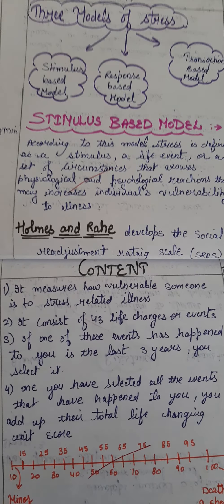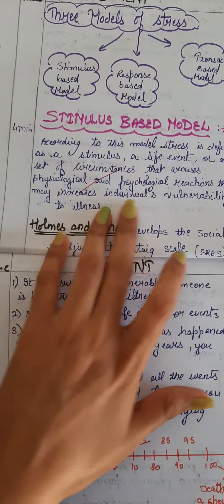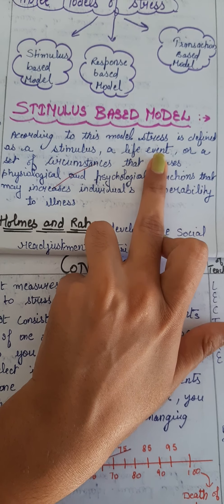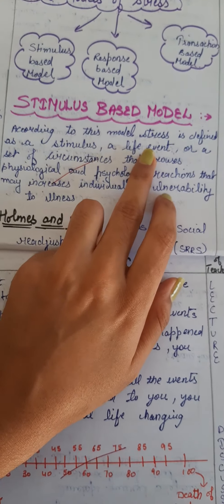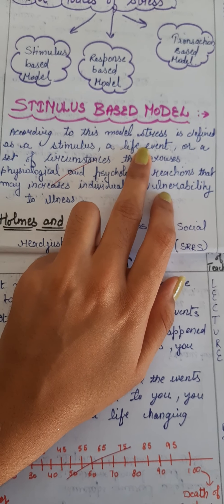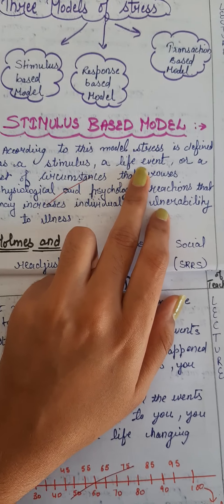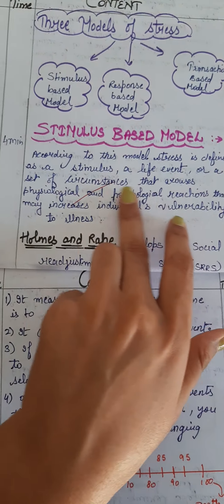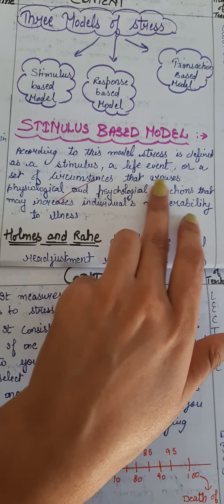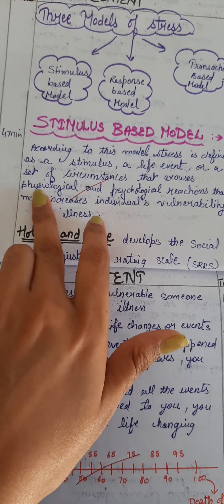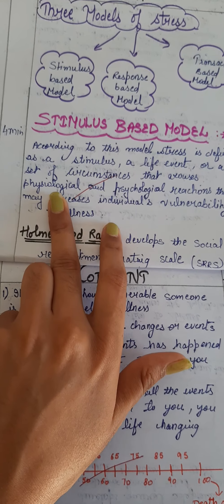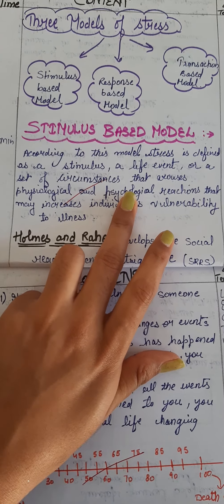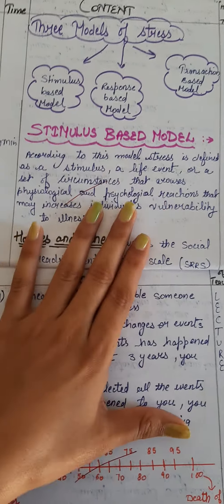The stimulus may be a life event — for example, the death of a spouse, an incident, accidents, or traumas — or a set of circumstances that arouse physiological responses such as injury or illness, and psychological responses such as negative thoughts. All of these are known as stimuli.